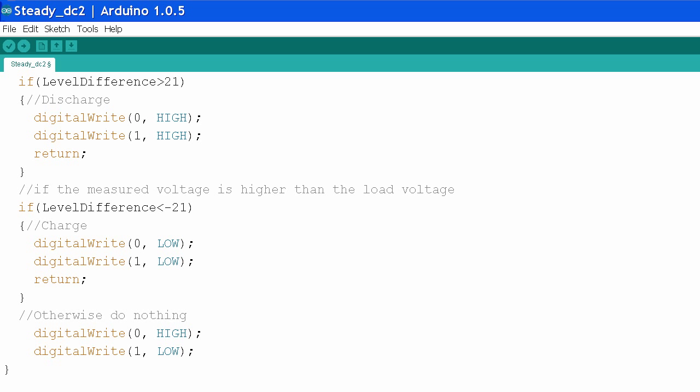When the difference is greater than 21, I discharge the capacitor. It is charged when the difference is less than minus 21. If the voltage is within this range, the capacitor is left alone. This is what makes the output so stable.